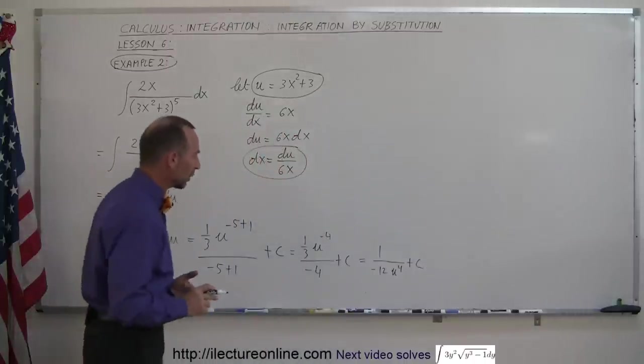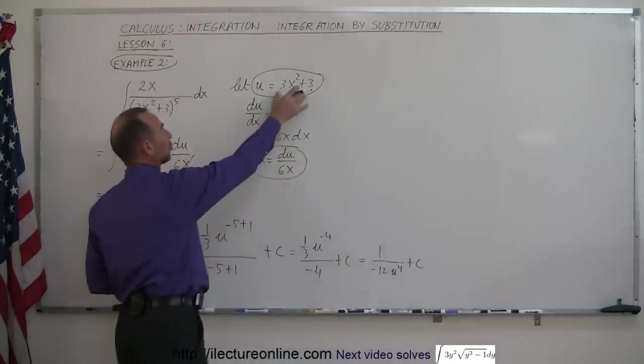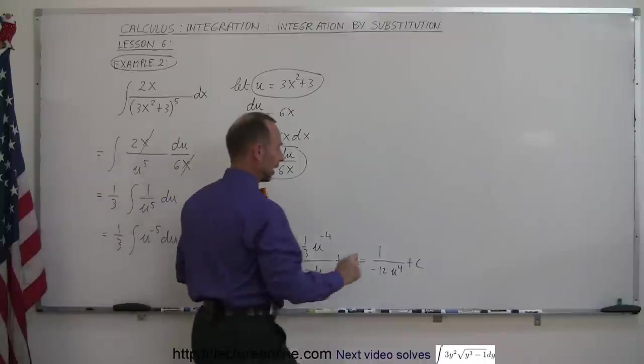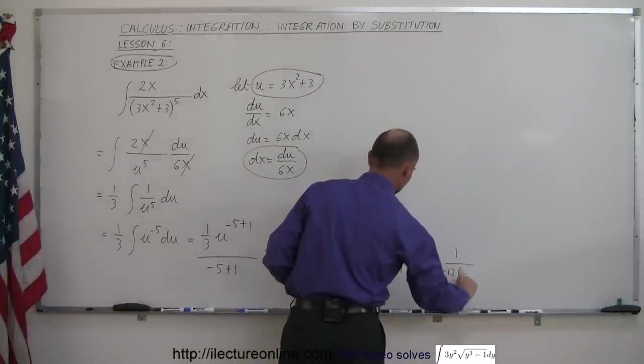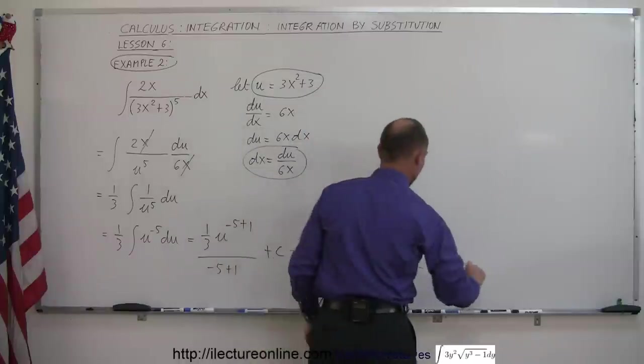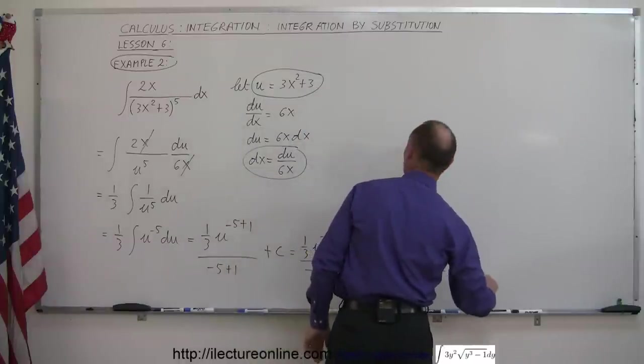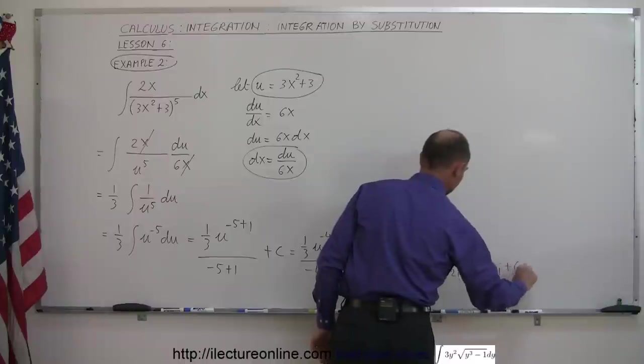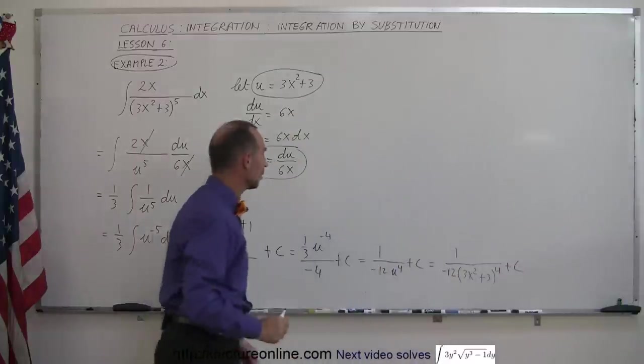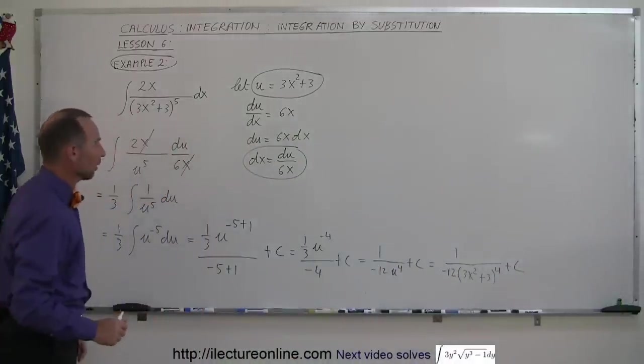And then finally we replace u by what u equals in terms of x. So this can be written as negative 1 over 12, and instead of u to the 4th, we write 3x squared plus 3 to the 4th power plus a constant of integration. And that's the integral of this initial problem.